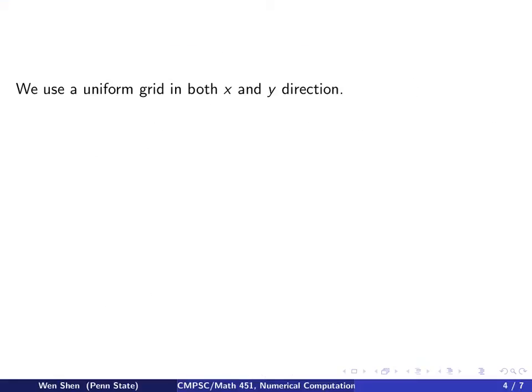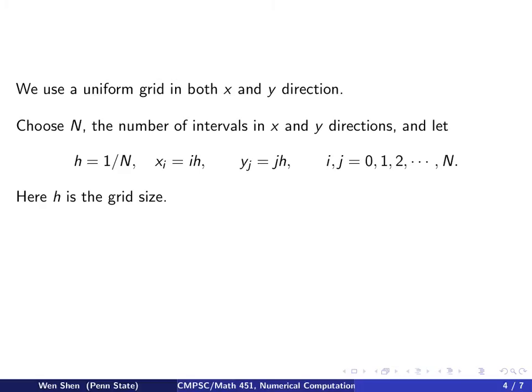We now set up a uniform grid in both x and y directions. Fix a positive integer capital N, which is the number of intervals in both x and y directions. Let h be the distance between two grid points, so it's one over N. Then x_i, the grid value in the x direction, becomes i times h, and y_j will be j times h. Here i and j are two indices, each running from zero to capital N. This value h is often referred to as the grid size.